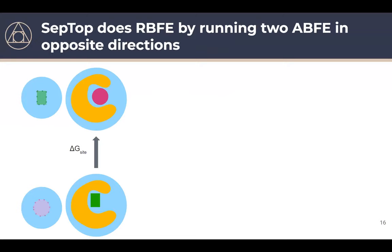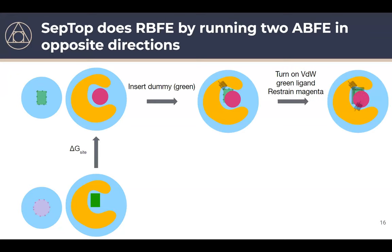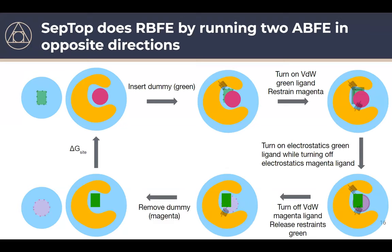How does this work? We have two ligands — the magenta and the green — and we calculate the difference in binding free energy by swapping them against each other: completely removing one from the binding site while inserting the other. In a thermodynamic cycle, we insert the dummy green ligand and restrain it to the binding site, turn on its van der Waals, restrain the other ligand, then turn on electrostatics of the green ligand while turning off those of the magenta, slowly remove the remaining magenta interactions and release restraints. The same cycle is done in solvent.